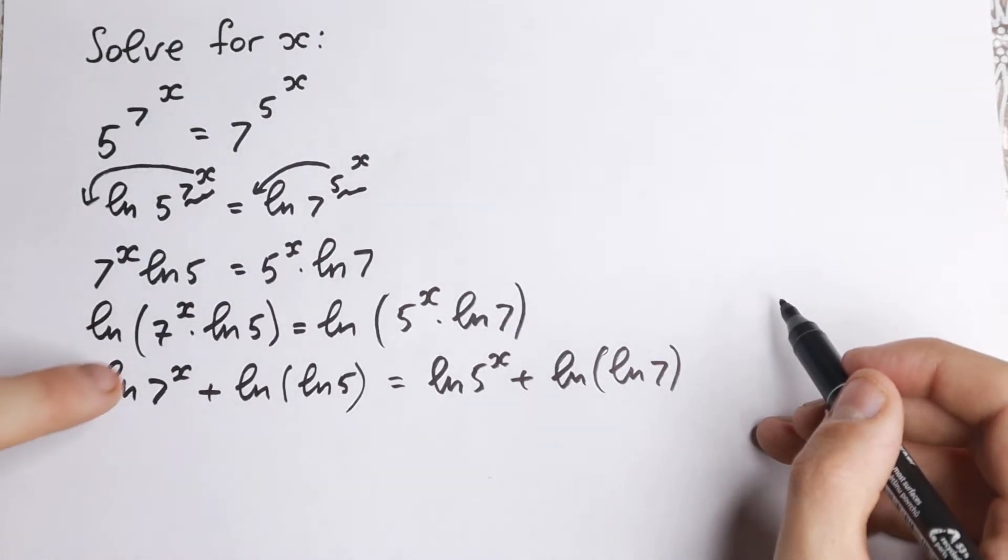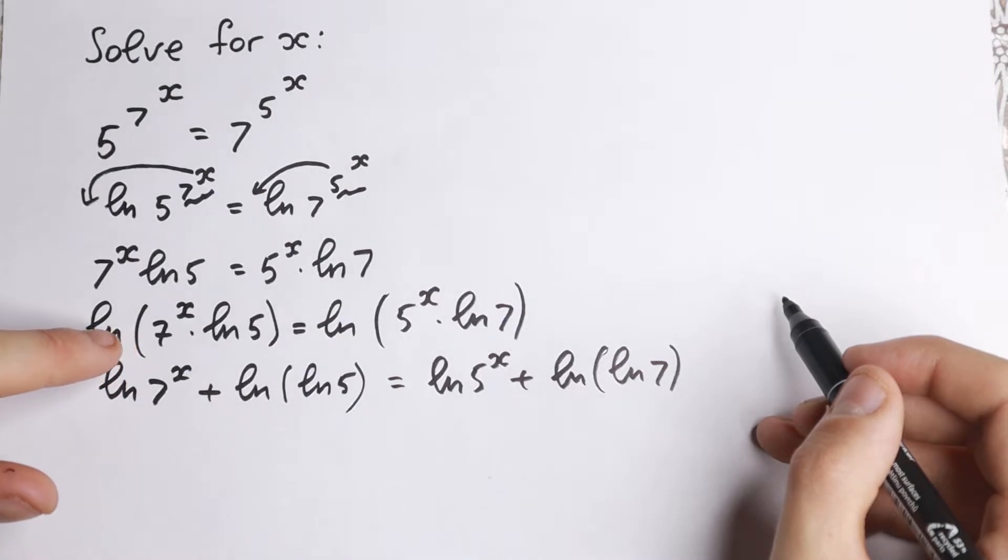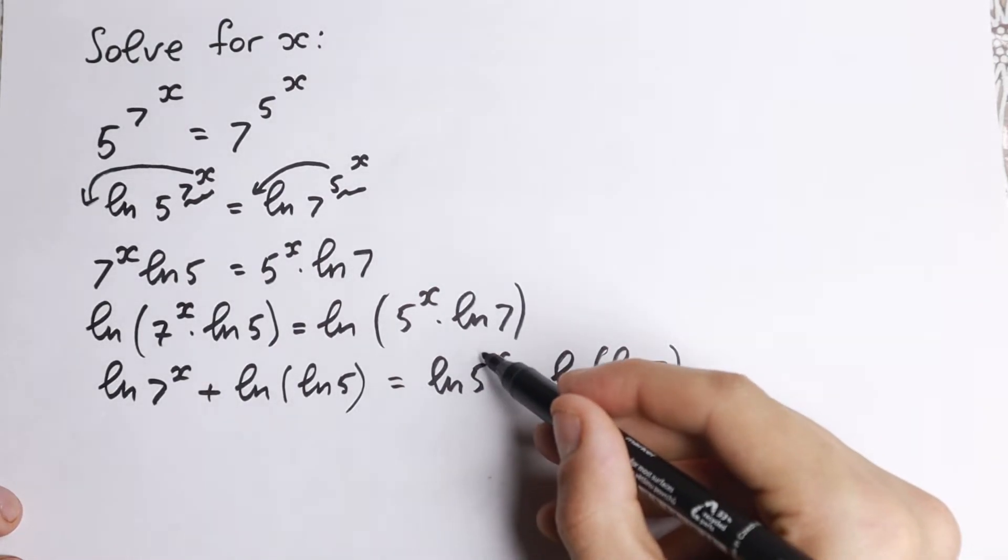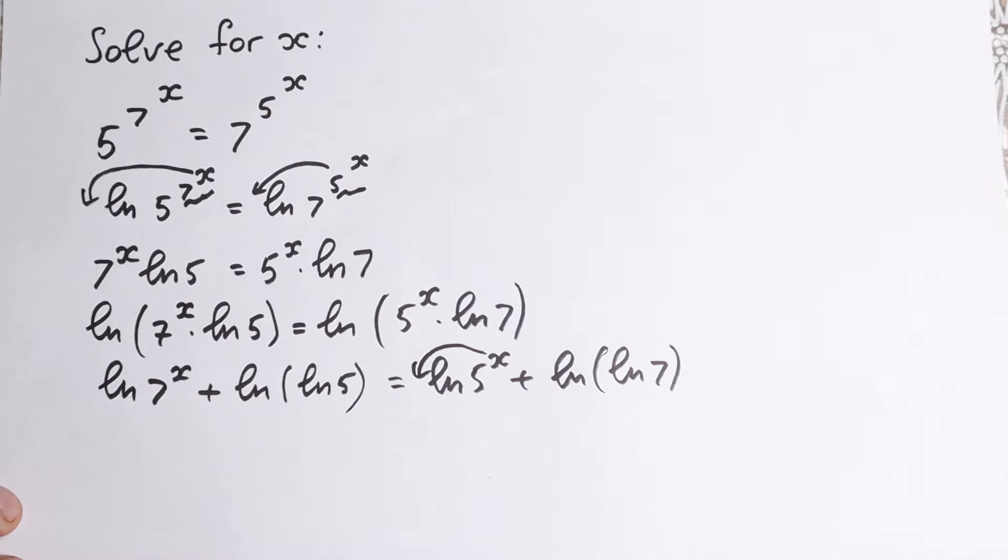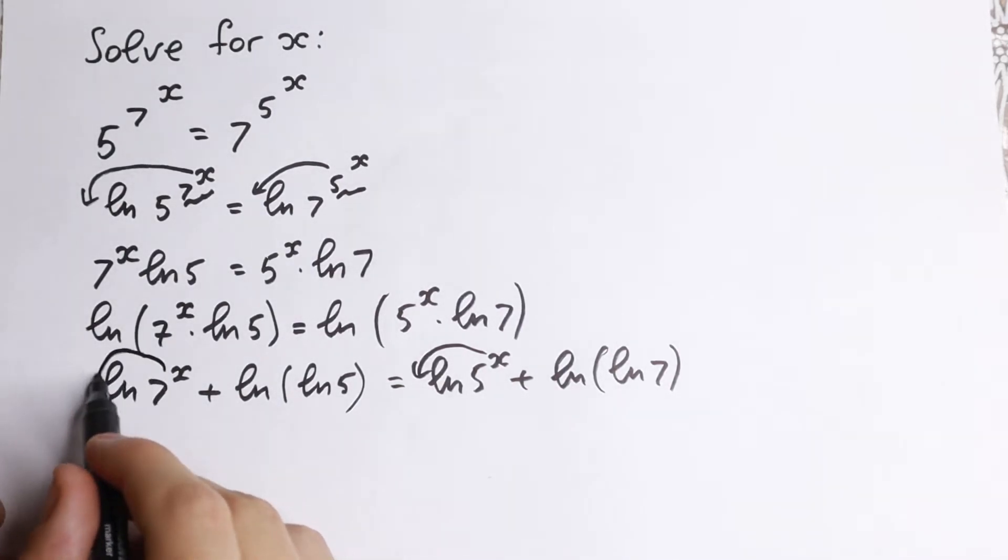I hope you understand this step. Just knowing the log property, so if you have natural log of a product, you can write it as a sum of 2 logarithms. That's right here. What are we going to do next? Right here, the same thing. We can write this x right here in the beginning, and right here we can write it as well.